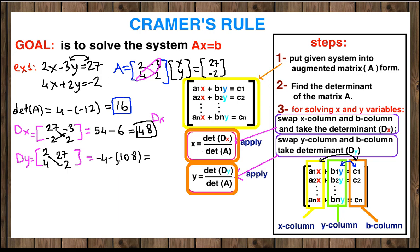For DY, negative 2 times 2 is negative 4, minus 4 times 27 which is 108. Negative 4 minus 108 is negative 112. This is our DY. Now we can apply the formula: for the X variable we divide DX by the determinant of A.